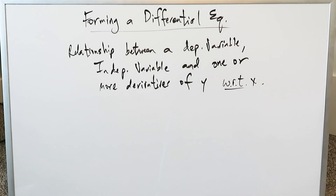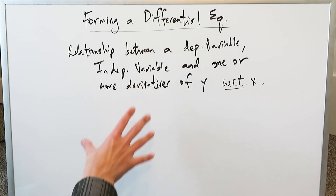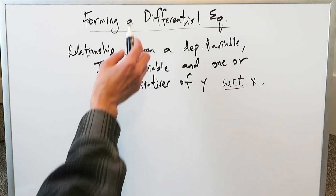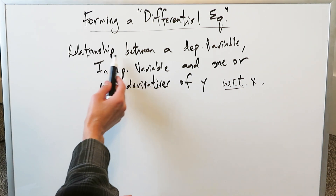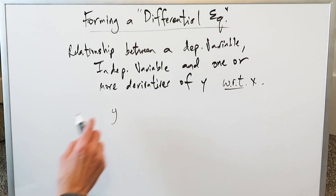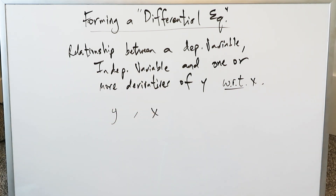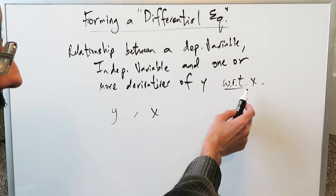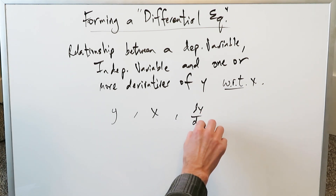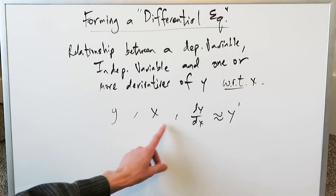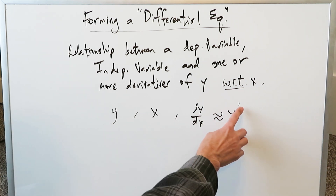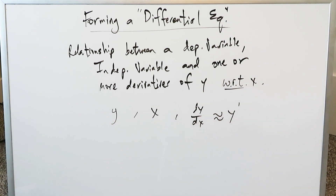With the knowledge you have right now with regards to calculus 1, single variable calculus, you can delve into this topic of differential equations. A differential equation is a big part of higher level calculus. It is a relationship between a dependent variable — generally y, the variable on your y-axis — and an independent variable x, and lastly one or more derivatives of y with respect to x. You're looking at dy/dx, which is synonymous with y prime. If you're seeing an equation with y's, x, dy/dx, or y primes — you can have second order, third order, whatever — then you're looking at a differential equation.